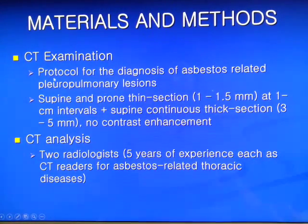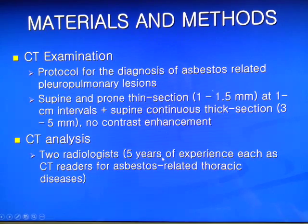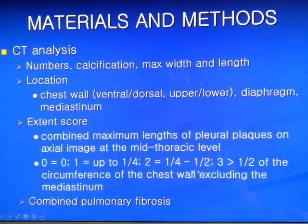CT examination was performed with a protocol for the diagnosis of asbestos-related pleural pulmonary lesions, including supine and prone section scan at 1 cm intervals. CT images were analyzed by two radiologists who have 5 years of experience as CT readers for asbestos-related thoracic disease. Numbers, calcification, maximum widths, length, and location of pleural plaques were recorded, and the extent score was measured according to the involvement of the circumference of the chest wall. Combined pulmonary fibrosis was also evaluated.